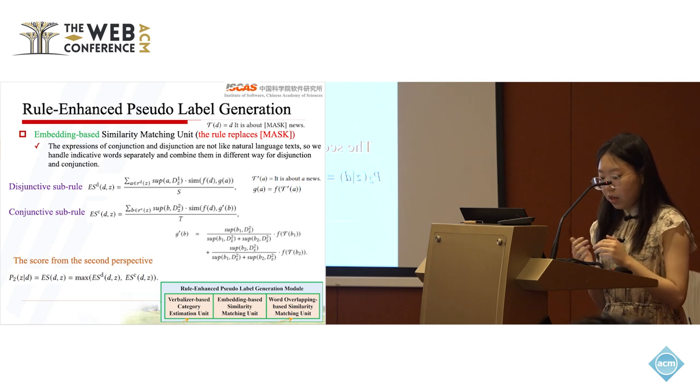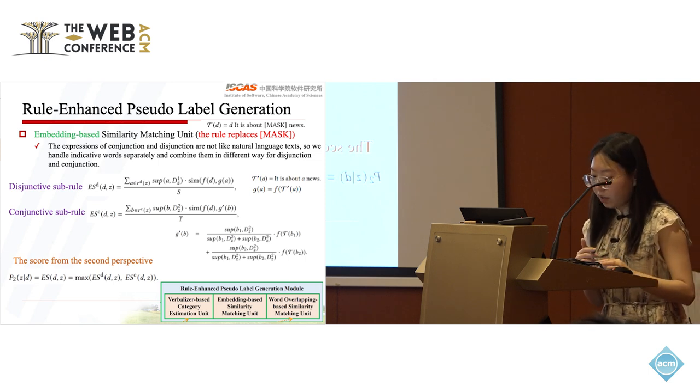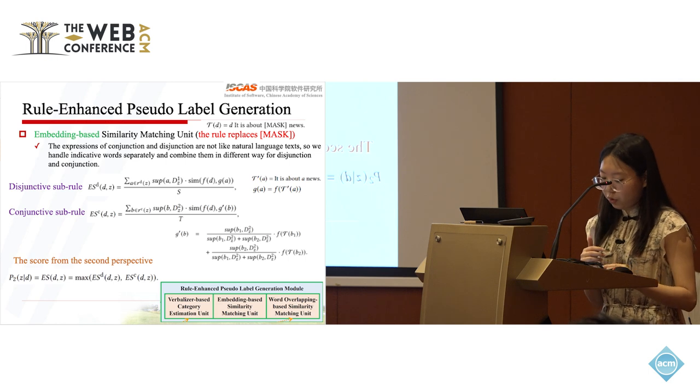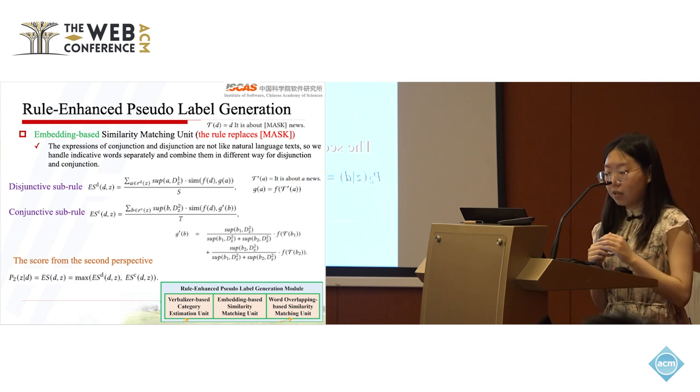Then, we weighted sum the similarity with the support from frequent pattern mining. For conjunctive sub-rules, the outer disjunction option can be handled in the same way as the disjunctive sub-rule. And the embedding of the two-item set rule is computed as the weighted sum of the embedding vectors of the two conjunctive terms with the one-item set support.